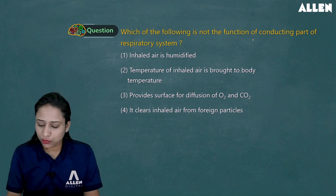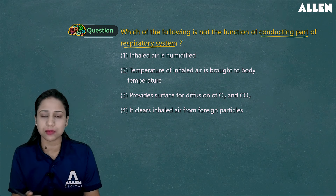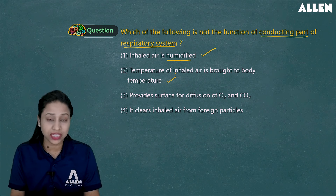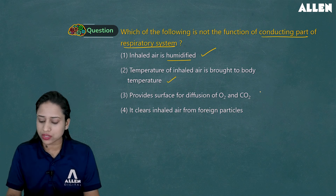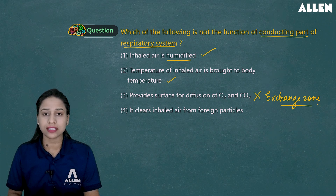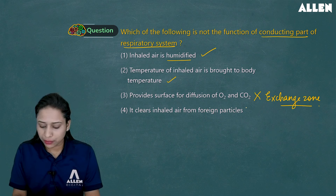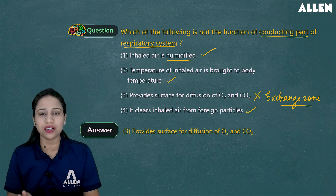Our first question: Which of the following is not the function of the conducting part of the respiratory system? Option 1 — inhaled air is humidified — was a function. Option 2 — temperature of inhaled air is brought to body temperature — was a function of the conducting zone. Option 3 — provide surface for the diffusion of oxygen and carbon dioxide — is not a function; that is the function of the exchange zone. Option 4 — clears inhaled air from foreign particles — was also a function of the conducting zone. Hence, the correct answer is option number 3.